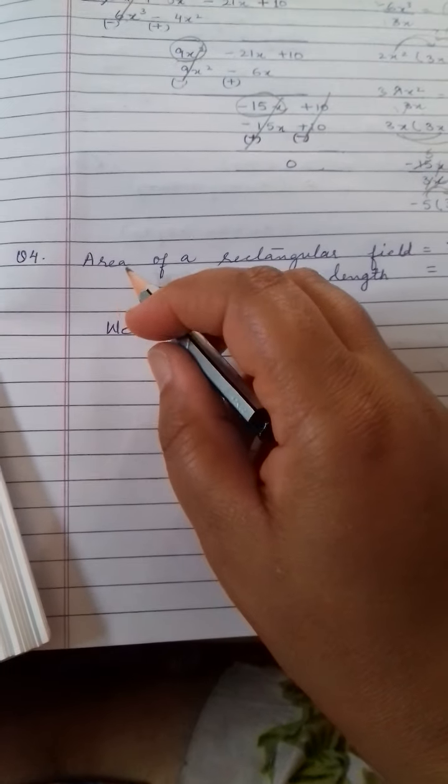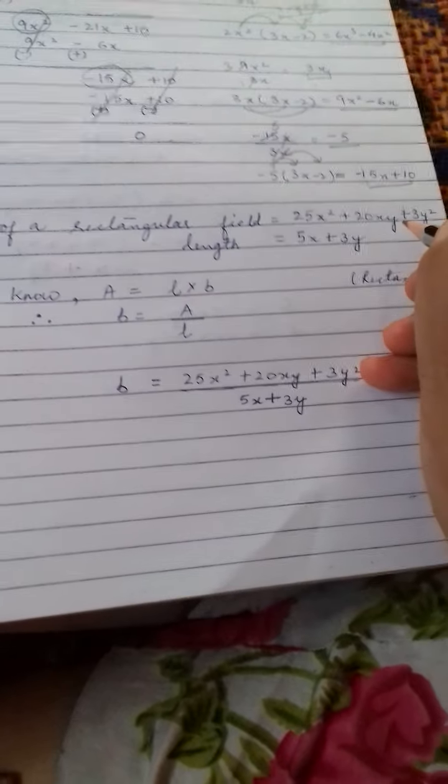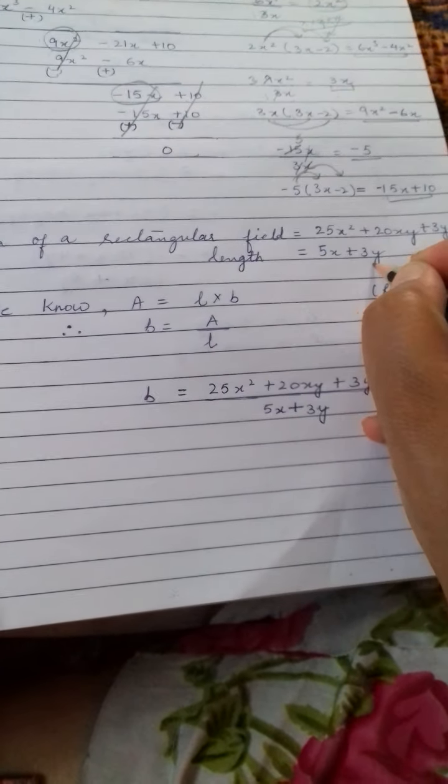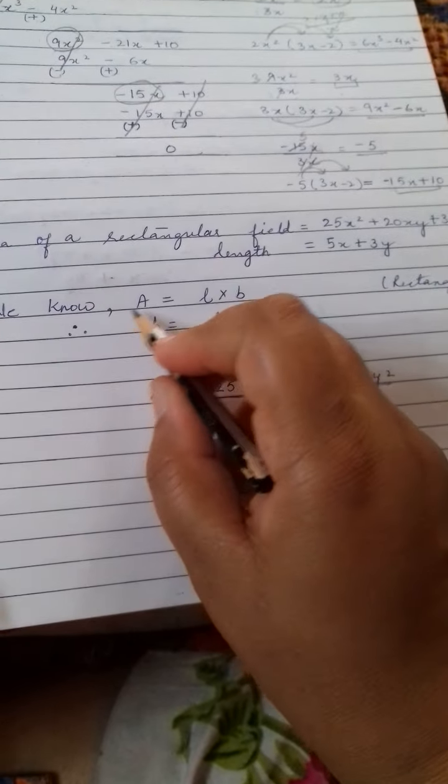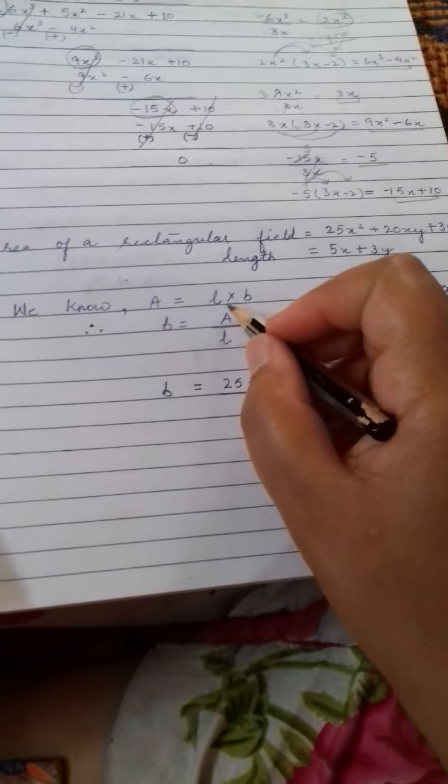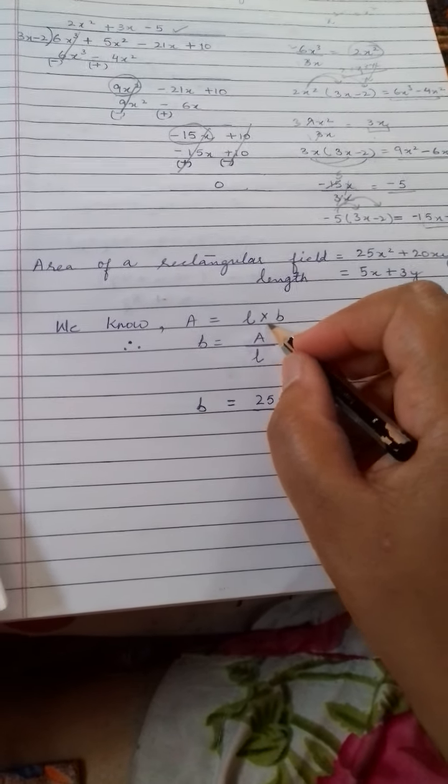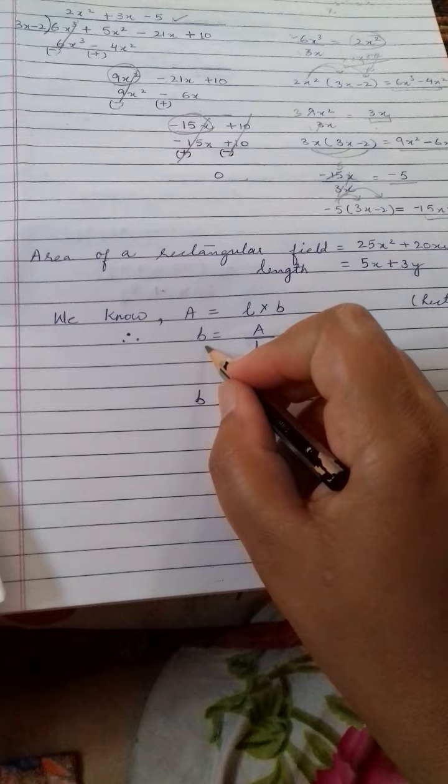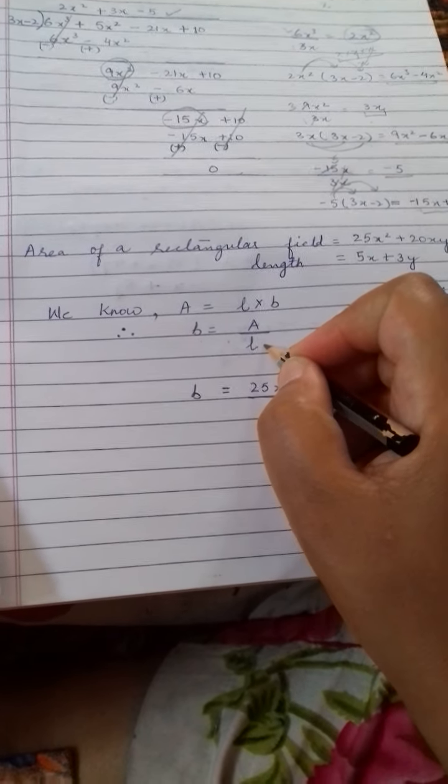Question number 4. Area of a rectangular field is given, length is given. We know that area of a rectangle is equal to length into breadth. Therefore, children, breadth is equal to area upon length.